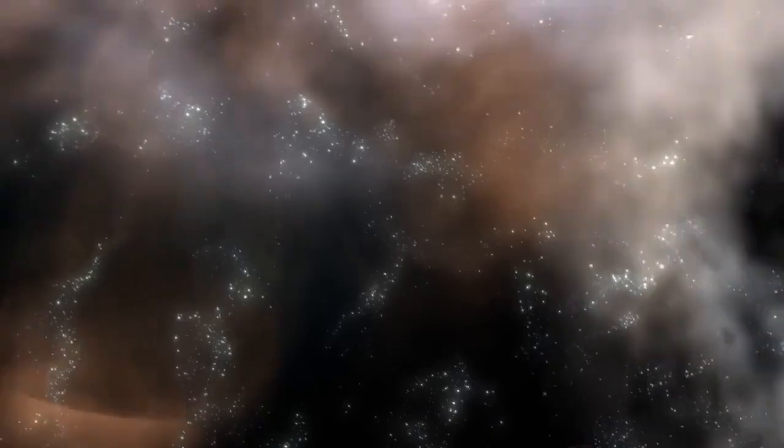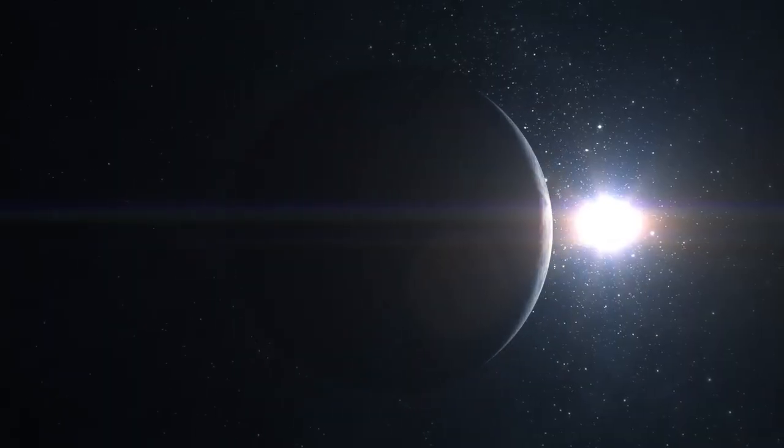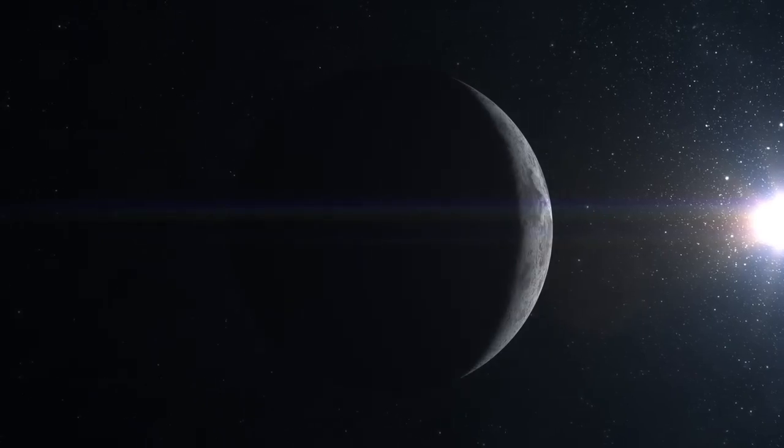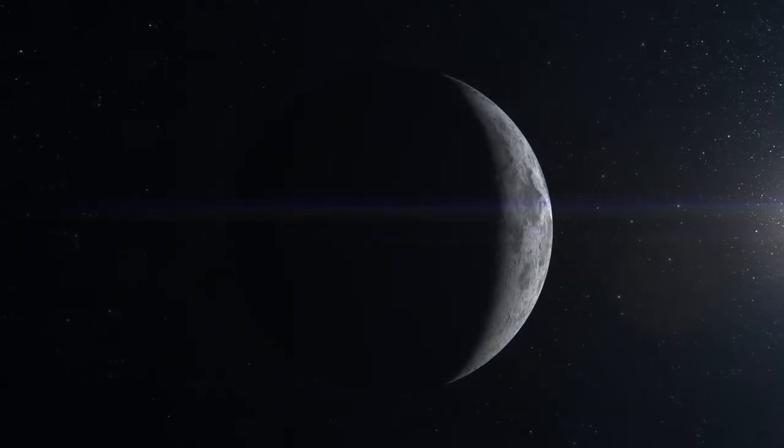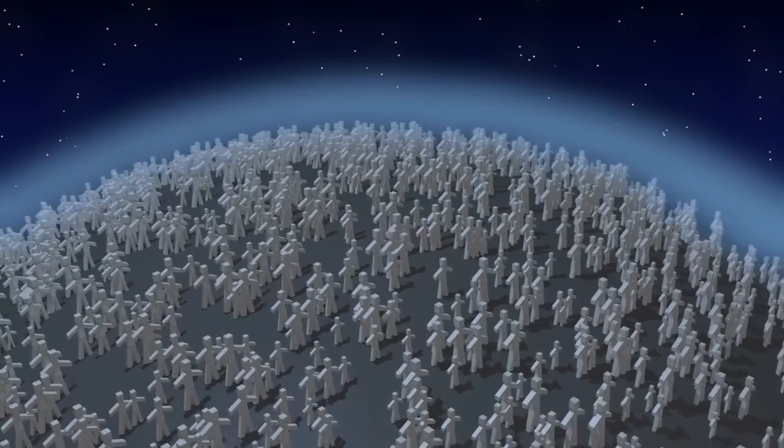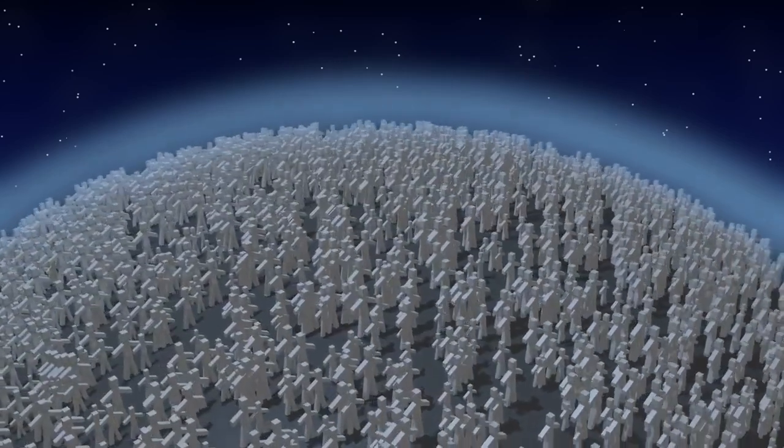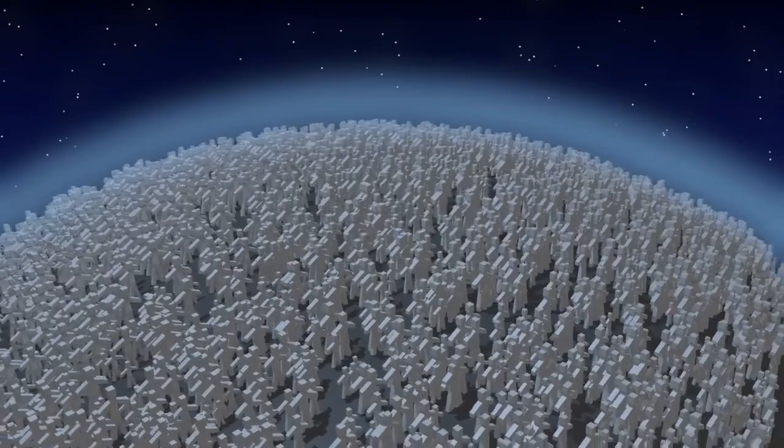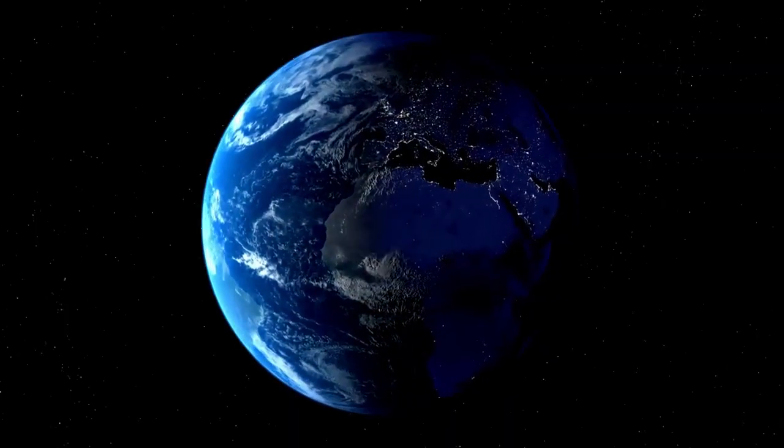Now imagine how long it would take for us to travel to the next star system, Alpha Centauri, even if something were traveling at the same speed as the Voyager probe, that is, 38,000 miles per hour. It would take a staggering 77,000 years to reach Alpha Centauri. It shows us the immensity of the distances involved in exploring the cosmos.